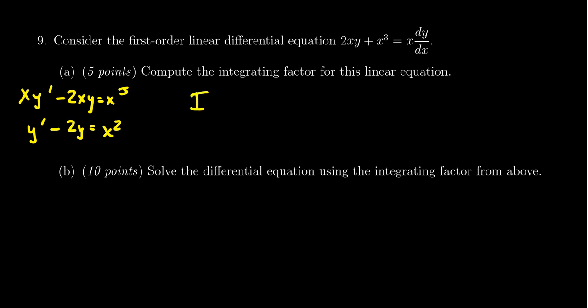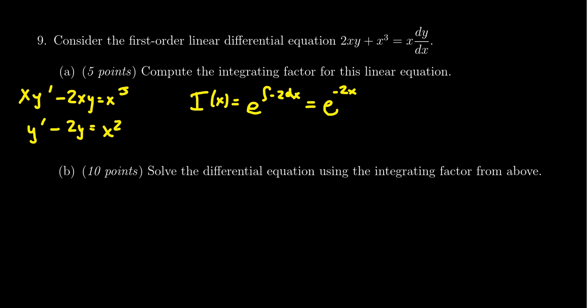This tells us that the integrating factor is going to equal the exponential e to the power of the integral of the coefficient of y — make sure you grab the negative sign. So you get the integral of negative 2 dx, for which you can grab any antiderivative. I'm going to use negative 2x, so my integrating factor is e to the negative 2x.